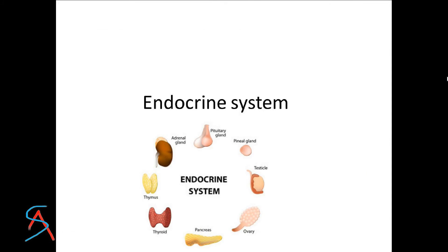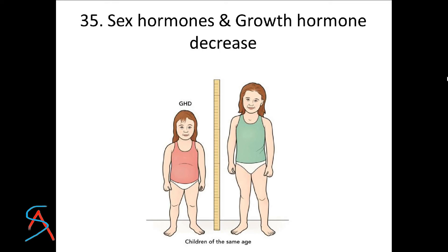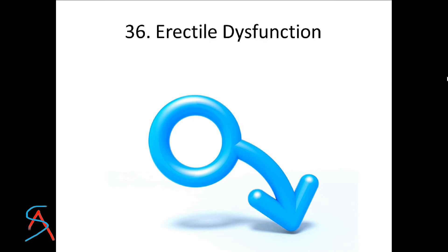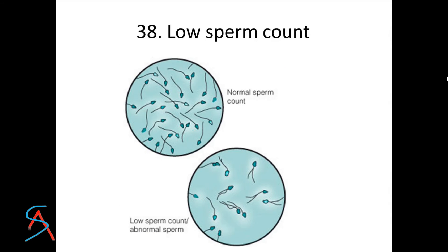In the endocrine system, alcohol can cause an imbalance between glucagon and insulin, predisposing to diabetes or increasing insulin resistance. If alcohol is taken at a young age, it can decrease sex hormones and growth hormones, causing various deformities. Sexual dysfunction includes erectile dysfunction, decreased ejaculation volume, and low sperm count.